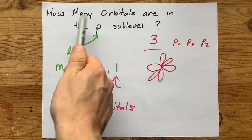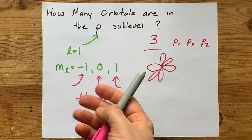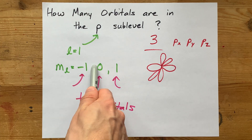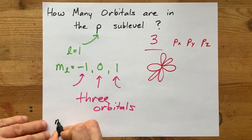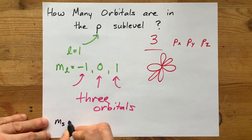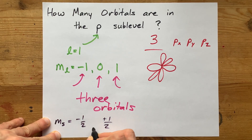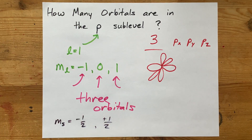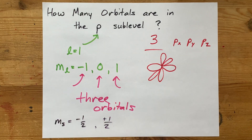If you've been asked how many electrons can be in a p sub-level, the answer is six, because each of these orbitals can hold up to two electrons. That's why the spin quantum number is negative ½ or positive ½, no matter what the ml is. Three orbitals times two electrons for each orbital — six electrons.